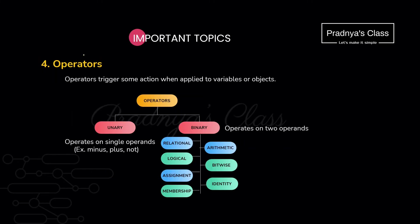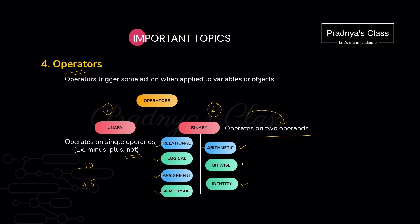Moving ahead to the next token — operators. Operators are categorized into two types: unary and binary. Unary operators operate on a single operand — you can write minus 10, plus 5, and 'not' is also a unary operator. Maximum operators are binary operators, meaning they operate on two operands. The most commonly used operators are arithmetic operators, relational operators, and logical operators. We also use membership operators, assignment operators, identity operators, and bitwise operators.